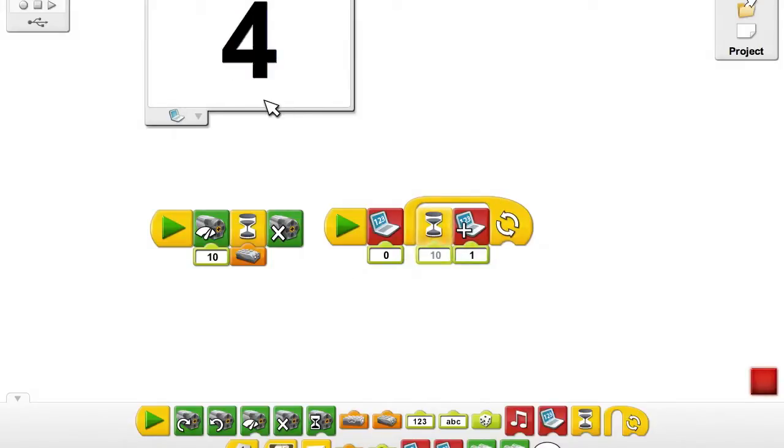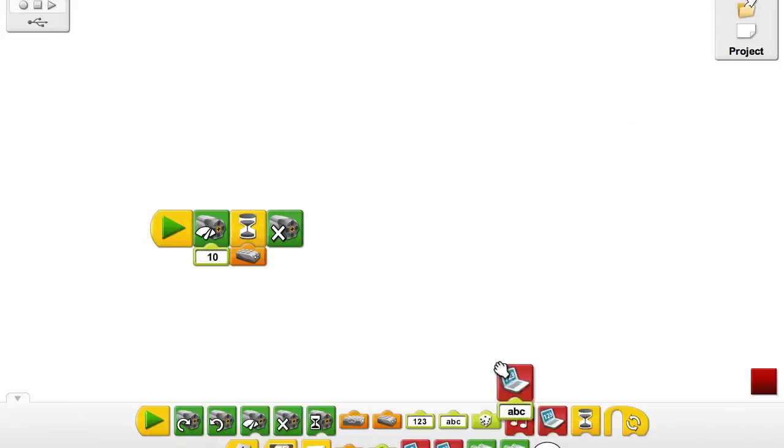Before you get started on our challenges, we wanted to show you how to create a timer in the WeDo software, because you're going to want to know how many seconds your top spins for. First, take the display block. It's the one with the numbers 123 on the laptop screen, and add it to the end of the program that you make.